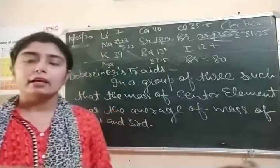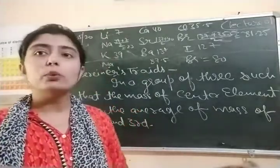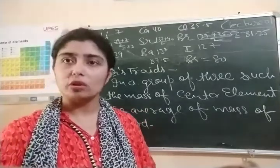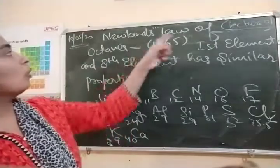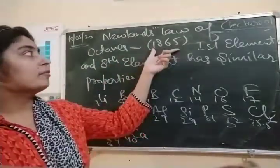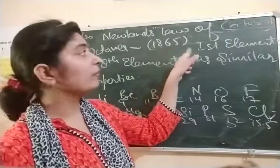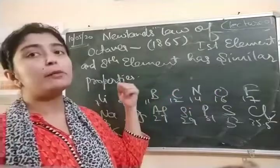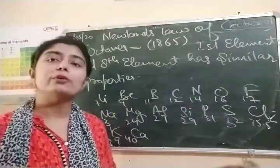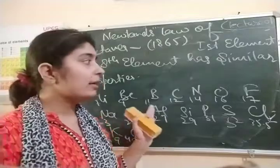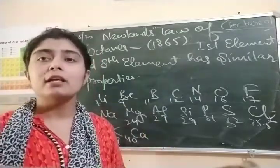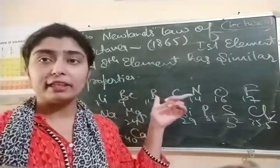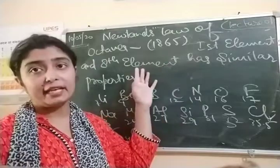That new concept was explained by the scientist Newlands. That concept was called Newlands' Law of Octaves. This concept was given by Newlands in 1865. According to Newlands, the first element and the eighth element have similar properties in the periodic table.